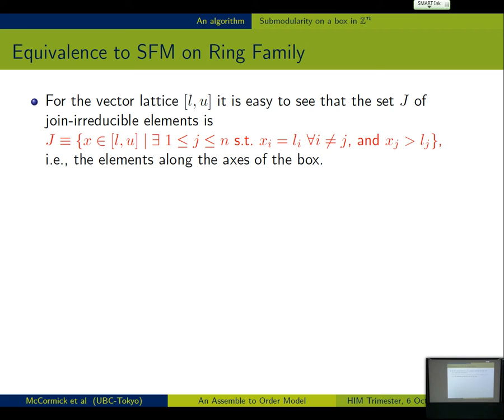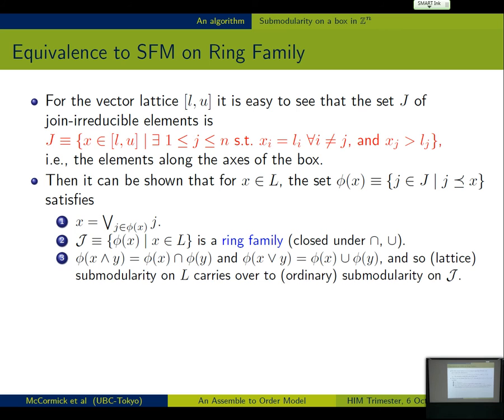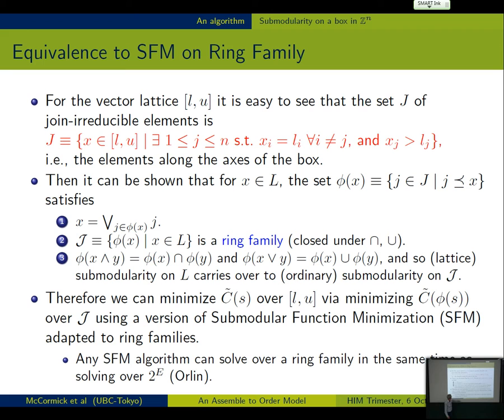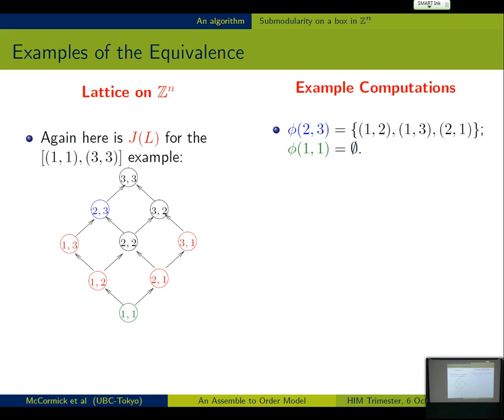So, there's the elements along the axes of the box. So, then it satisfies these nice properties. These nice properties say that every element is the join of the join irreducibles under it. The family of such sets is a ring family. And this operation respects the submodularity, basically. So, what that means is, ultimately, we are reducing the minimizing the lattice submodular function over the box to optimizing an ordinary submodular function over this ring family. And the great news is that any submodular function minimization algorithm can solve over ring family in the same time as solving over the whole family. Jim Orlin showed how to do that. Okay. So, here's an example. There's the join irreducibles. You can check these things and see that everything I've said is really true.